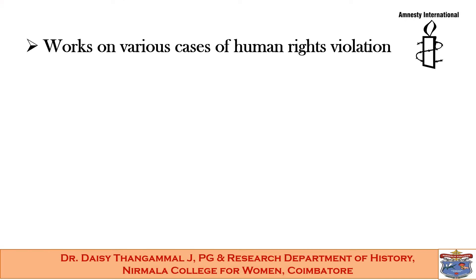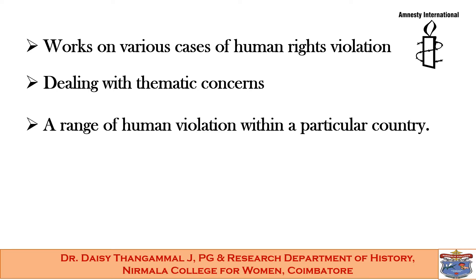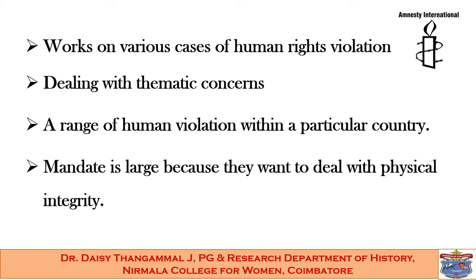The Amnesty International members work on cases of victims of human rights violations as well as numerous other actions — some dealing with thematic concerns like torture, women's rights, and rights of refugees; others dealing with a range of violations within a particular country. The International Secretariat of Amnesty is located in London and is responsible for research and the overall running of the organization. It has over 300 full-time staff and an annual budget of about 18 million pounds. Today, the mandate of Amnesty International is considerably wider than it was in the 1960s, and it deals with a wide range of violations of physical integrity.